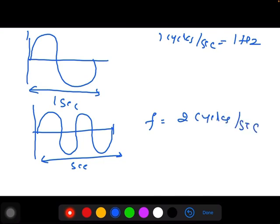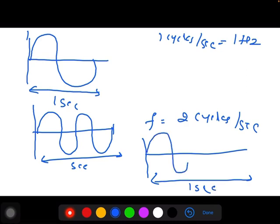Similarly, if you have three cycles in one second, one, two, three, there are three cycles. Then you have three cycles per second, that is three Hertz.